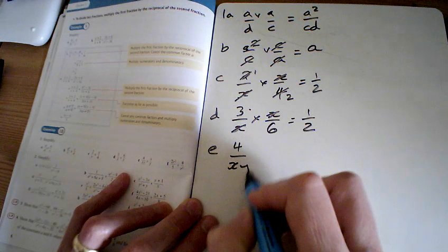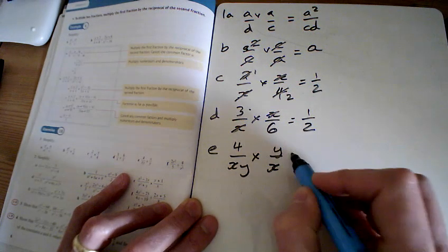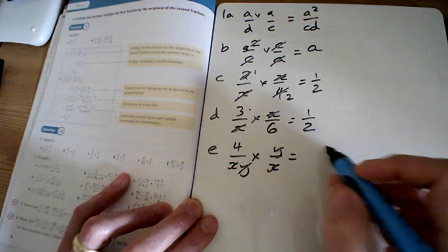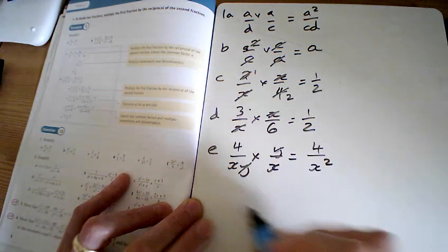E, same thing again, it's a divide, so I'm going to change it to a times, and I'm going to flip the second fraction. I've got the y's cancelling there, so I've only got a 4 on the top, and I've got x times x is x squared on the bottom.